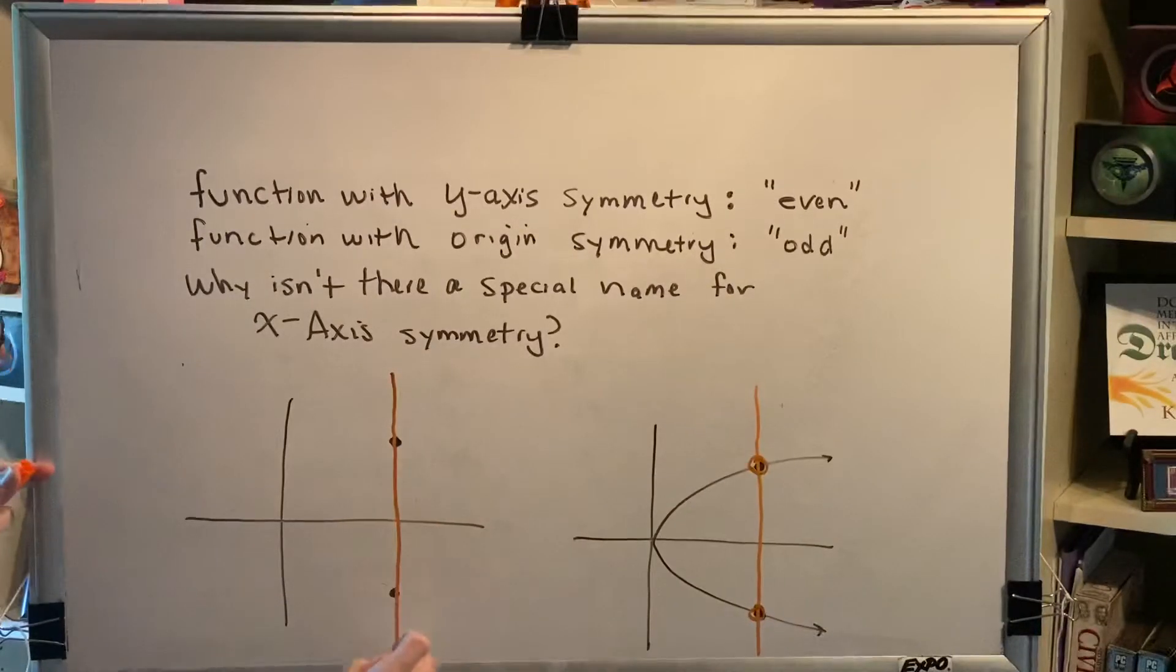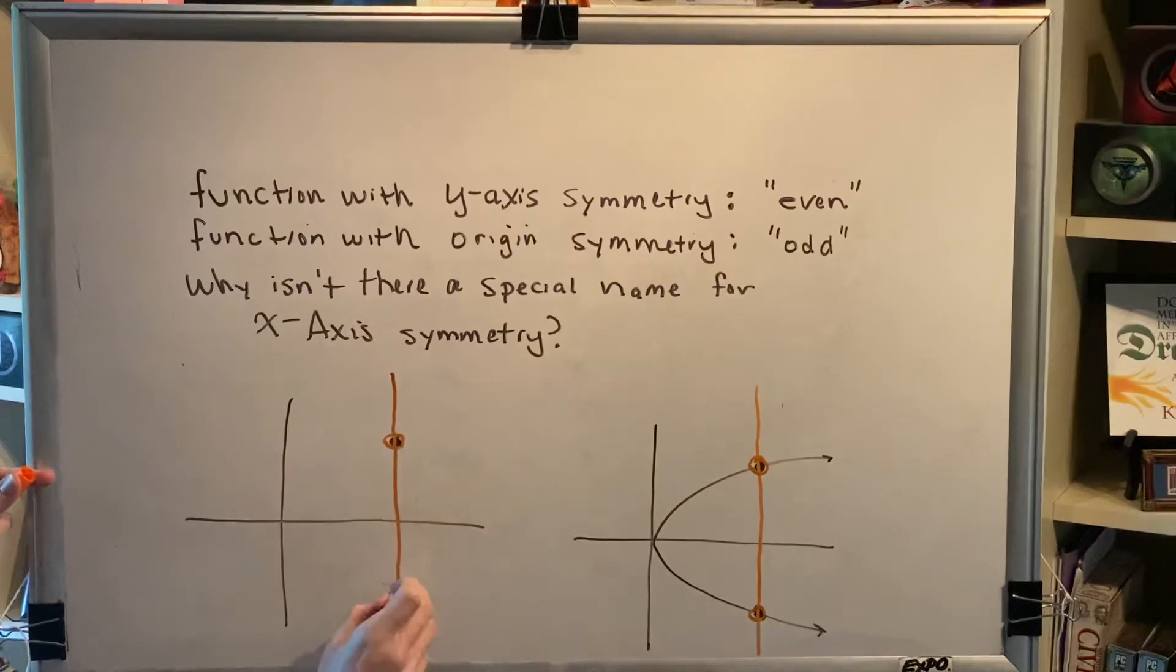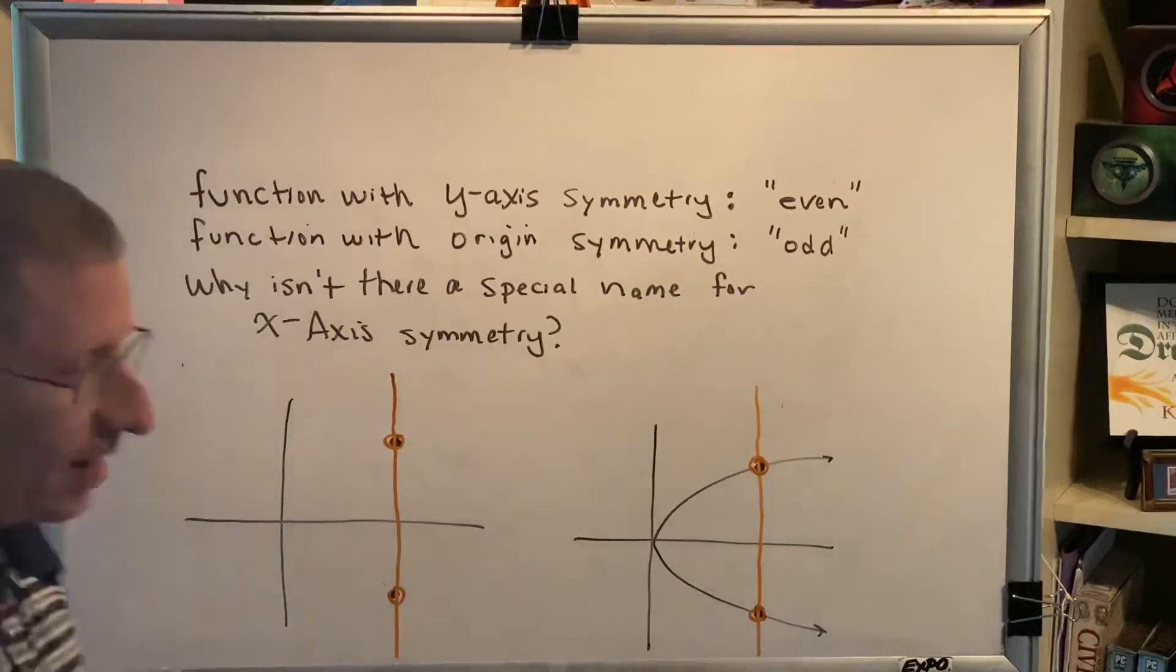And for this reason, functions with x-axis symmetry don't get a special name because that's not possible. It isn't possible for something to be a function and have x-axis symmetry.